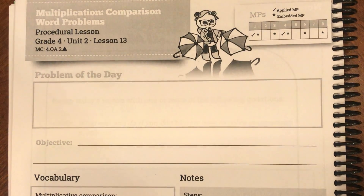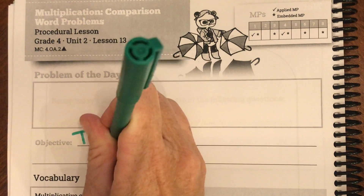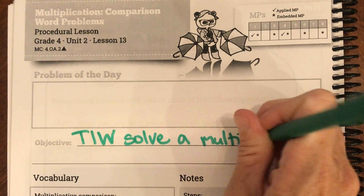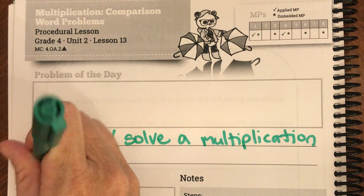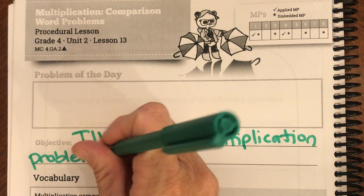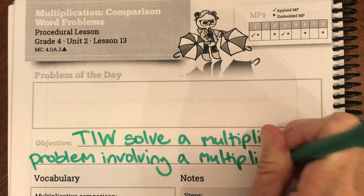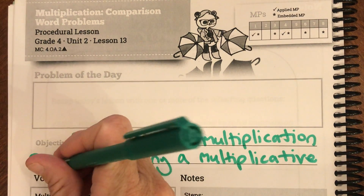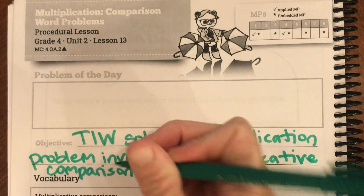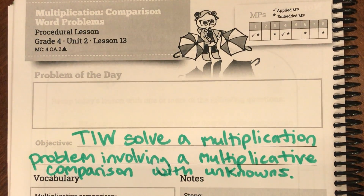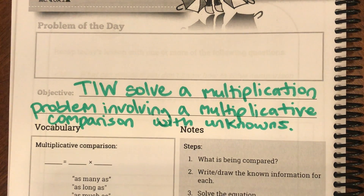Good morning ladies and gentlemen. Today we are on page 143 and our objective for today is: I will solve a multiplication problem involving a multiplicative comparison with unknowns. That is quite a goal today, so let's look at that. Today I will solve a multiplication problem, so we know what that is, involving a multiplicative comparison.